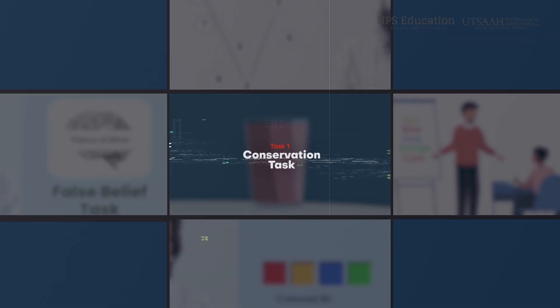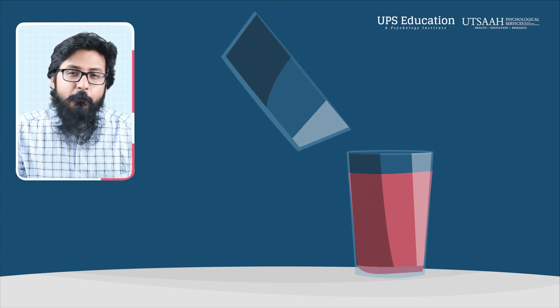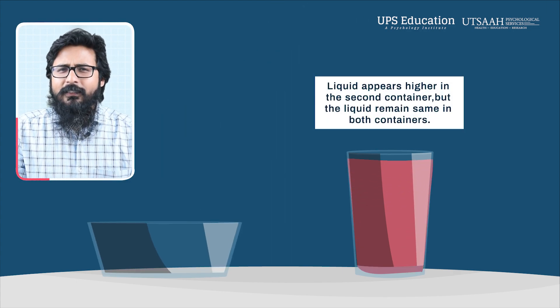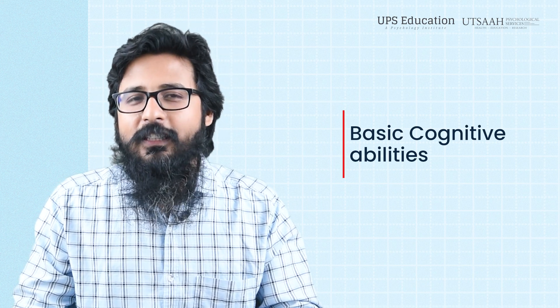First is the conservation task. The conservation task is commonly used in developmental psychology to assess cognitive development, particularly conservation of quantity — for example, understanding that the amount of liquid in a short wide glass is the same when poured into a tall thin glass. This task involves some cognitive processes, but it is not typically considered a direct measure of executive functions, as it primarily assesses basic cognitive abilities related to understanding physical properties.